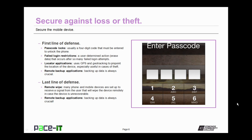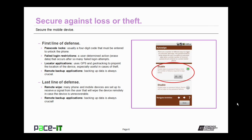Your first line of defense is the passcode lock. It's usually a four-digit code that must be entered to unlock the phone, although they are using other methods now as well. Many operating systems also have failed logon restrictions that you can enable. As a user, you get to determine which actions occur after so many failed logon attempts. Many mobile devices also have locator applications. These use GPS and geo-tracking to pinpoint the location of a device. It's especially useful in cases of theft, although I usually don't recommend confronting the thief.